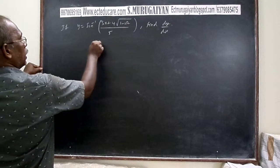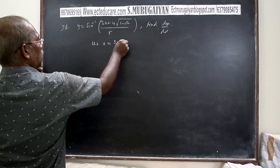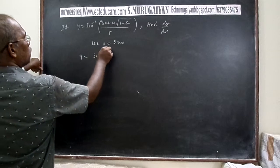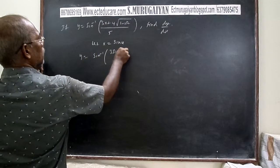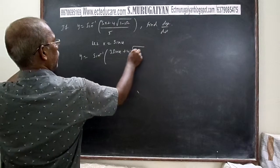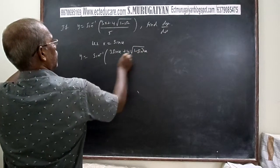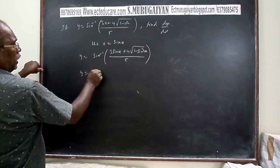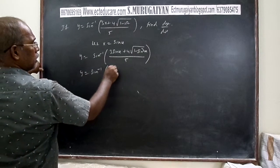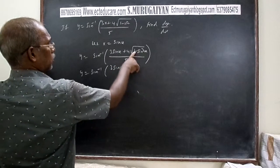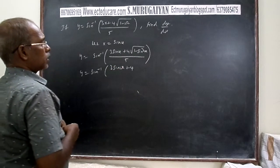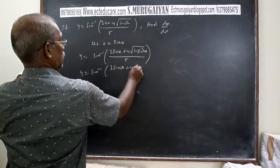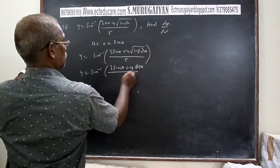Let us take x equal to sin θ. Then y equals sin inverse of (3 sin θ + 4√(1 - sin²θ)) / 5. Since 1 - sin²θ = cos²θ, the square root simplifies to cos θ, giving us sin inverse of (3 sin θ + 4 cos θ) / 5.